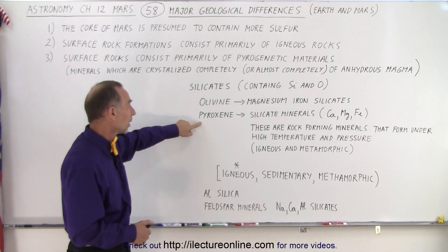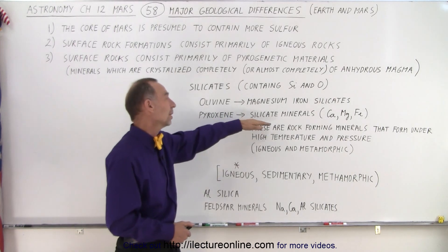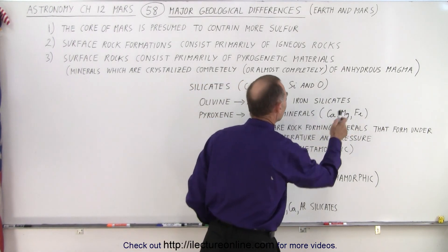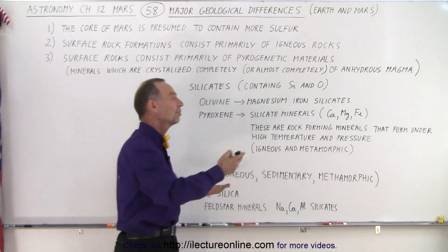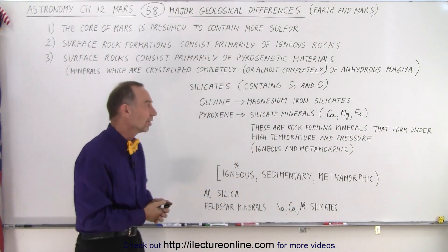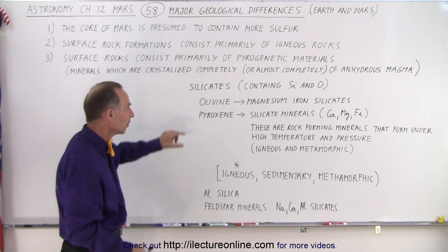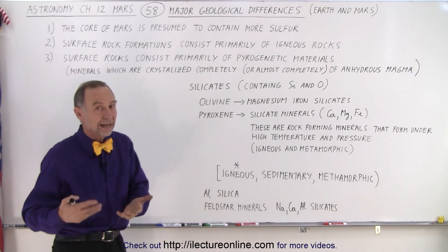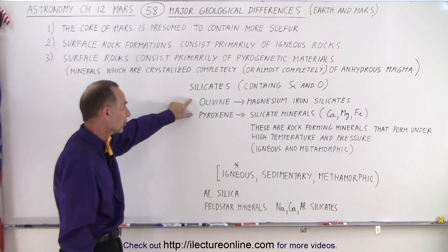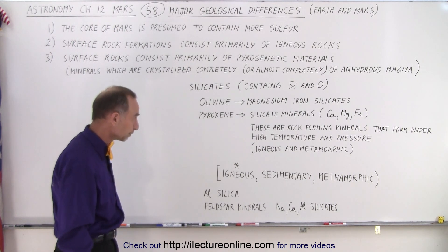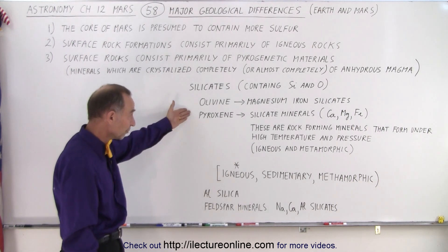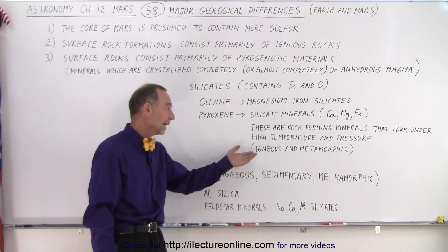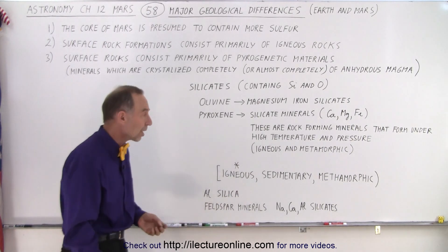And pyroxene is a silicate mineral that consists mostly of calcium, magnesium, and iron. Again, iron-magnesium silicates and calcium-magnesium-iron silicates are in a lot of abundance on Mars, which is unusual — we don't find as many of those on Earth. These rocks are formed under high temperature and pressure conditions, primarily igneous rocks, though some metamorphic type rocks are present as well.